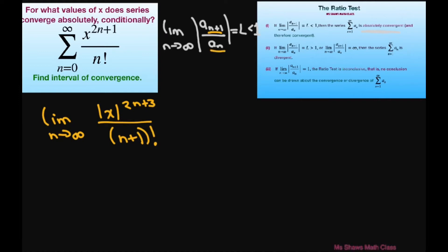We're dividing by a sub n, so that's going to be times the reciprocal of this: n factorial divided by absolute value of x to the power of 2n plus 1.